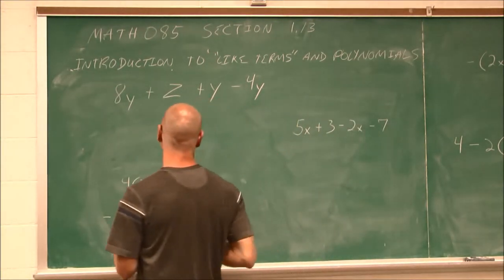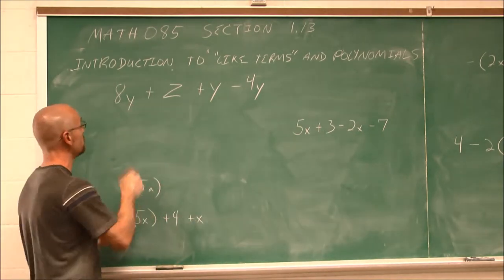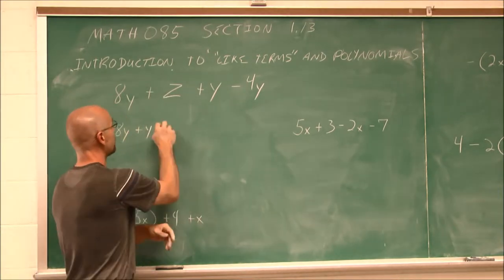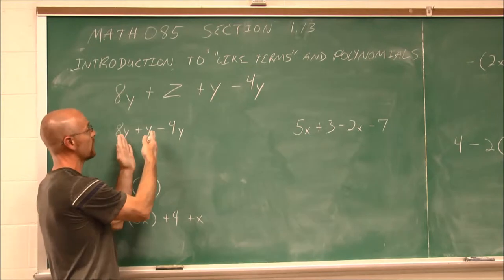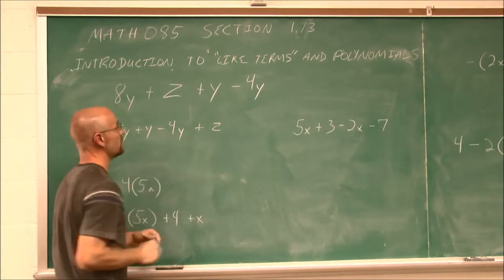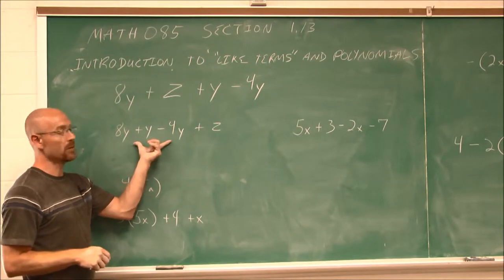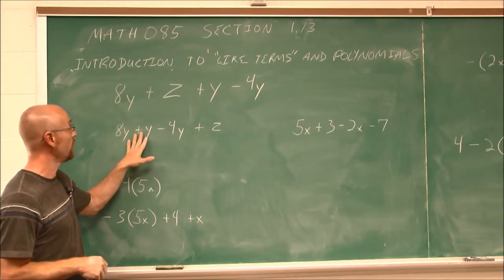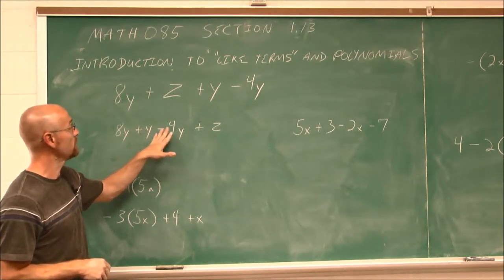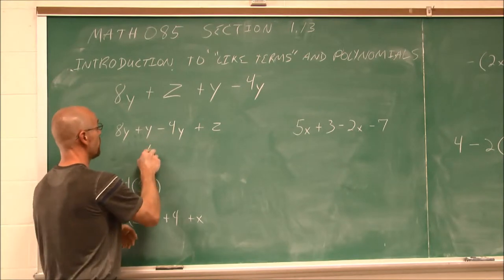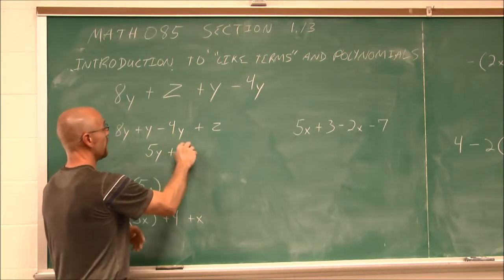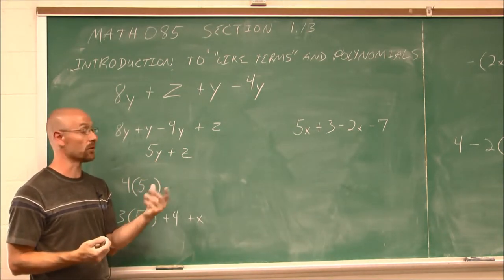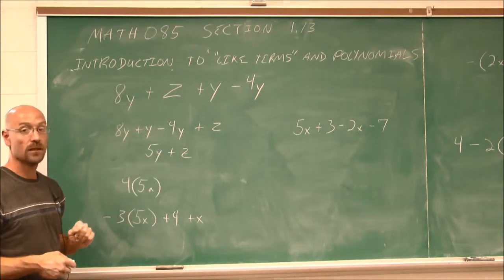I'm going to use the associative property and rearrange it. I have 8y's, and the like terms of a positive y and a negative 4y, so I rearranged them so they were all together. And then I have this unlike term of a z. Now I can combine the like terms. 8y plus 1 more y is 9y, and 9y minus 4y is 5y.